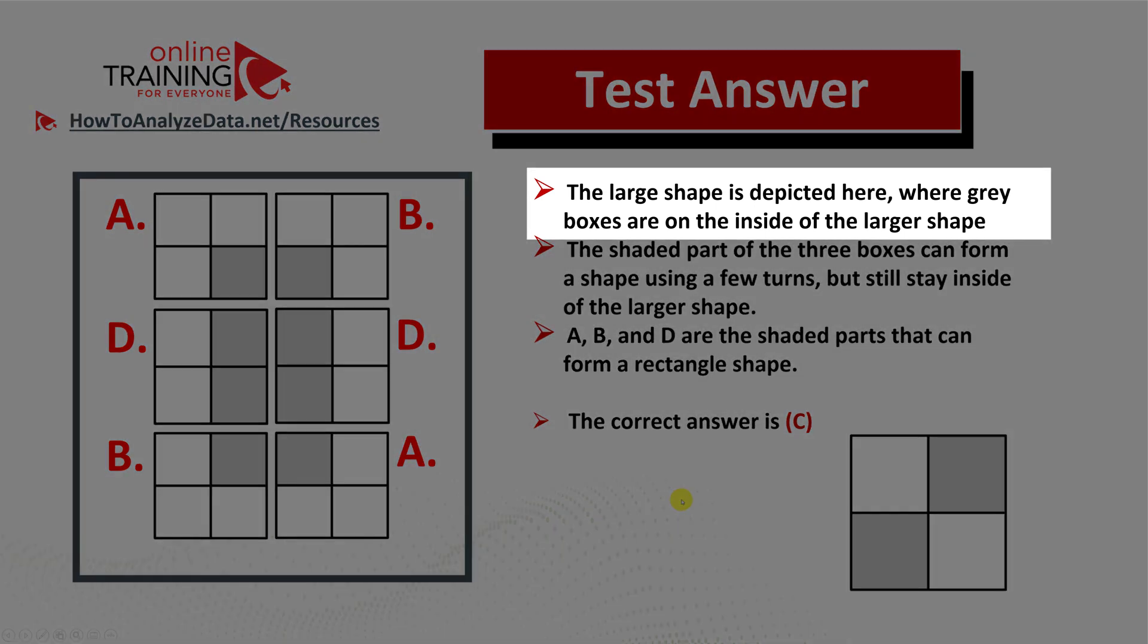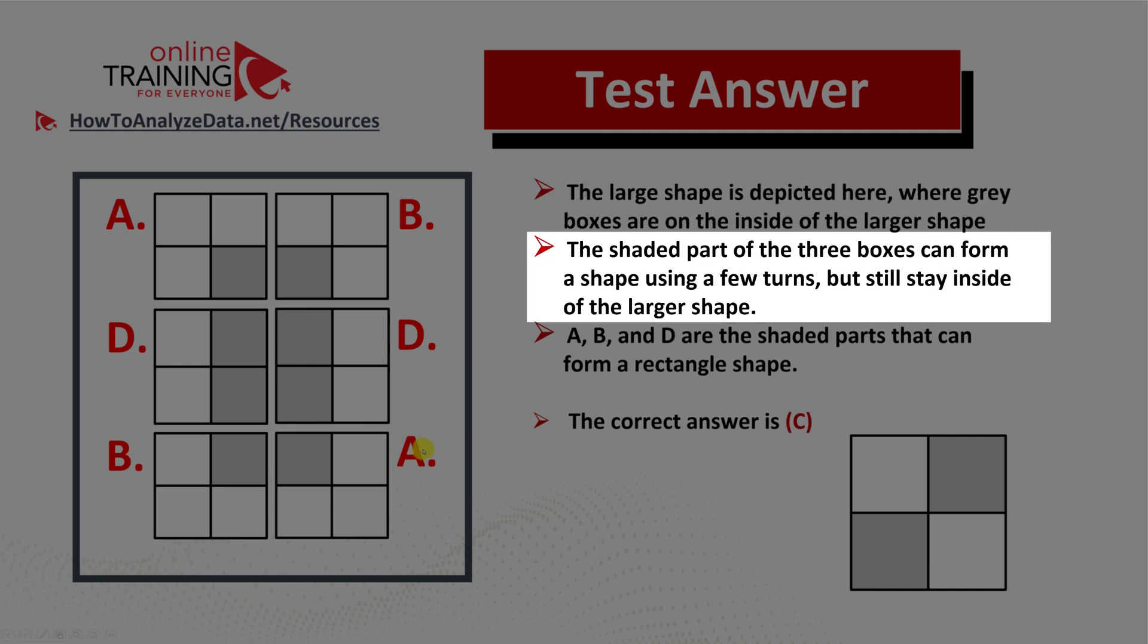The large shape is depicted here, where gray boxes are on the inside and white boxes are on the outside of the larger shape. The shaded parts of three boxes can form a shape using a few turns but still stay inside the larger shape.